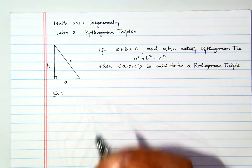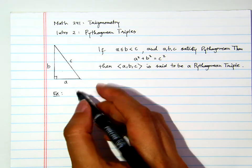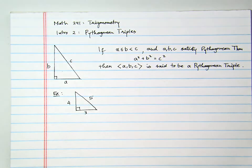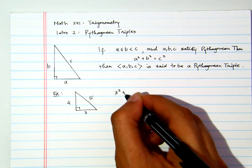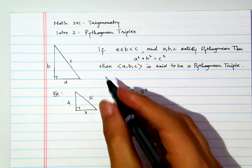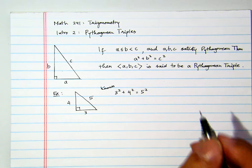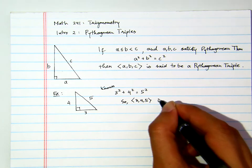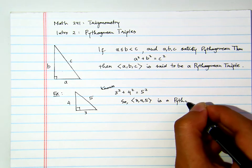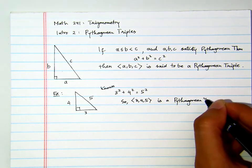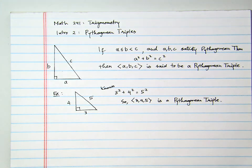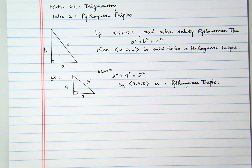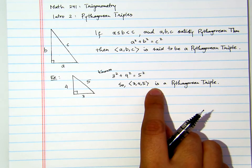For example, we know from example one in our first introduction that if you have a right triangle, and this is 3, this is 4, then this one will be 5. In other words, we know that 3 squared plus 4 squared equals to 5 squared. That implies that 3, 4, 5 is a Pythagorean Triple.